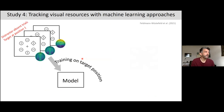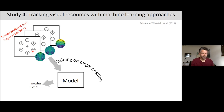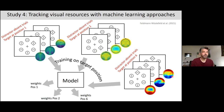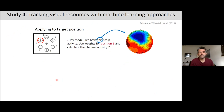Specifically, we trained the model on target position in distractor-absent trials for all six positions. In distractor-present trials, we applied the model weights for the target position to measure target attention, and separately applied the weights for the distractor position to measure distractor attention — using the exact same trials but different weights each time. This allows us to simultaneously track attention deployment to both the target and the distractor.